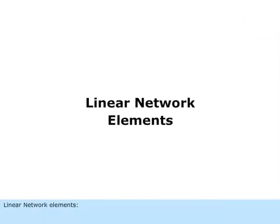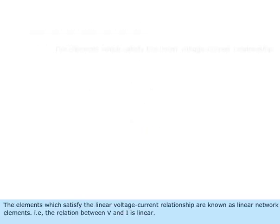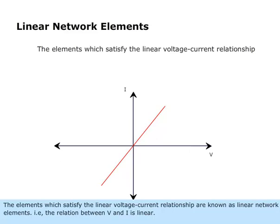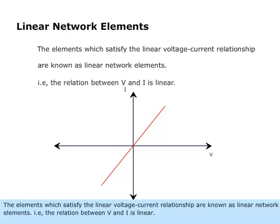Linear Network Elements: The elements which satisfy the linear voltage-current relationship are known as linear network elements, i.e., the relation between V and I is linear.